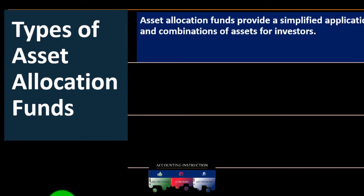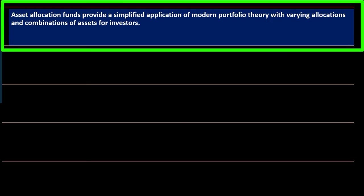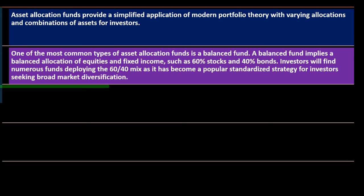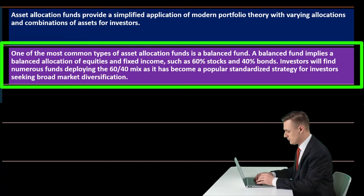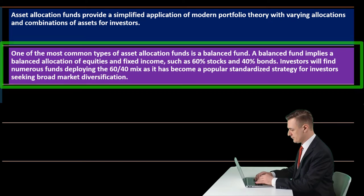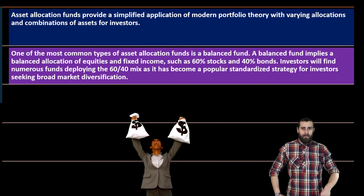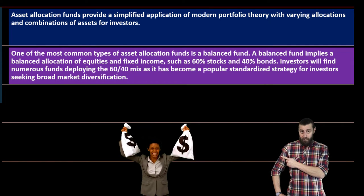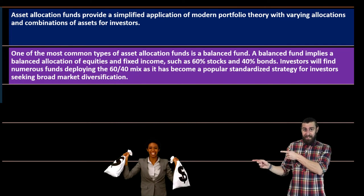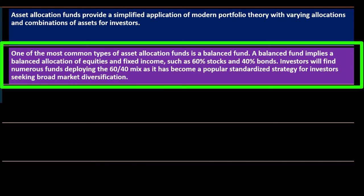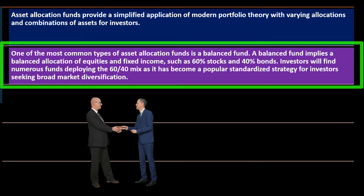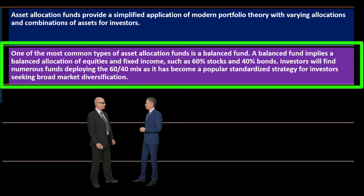Asset allocation funds provide a simplified application of modern portfolio theory with varying allocations and combinations of assets. One of the most common types is the balanced fund, which implies a balanced allocation of equities and fixed income — such as 60% stocks and 40% bonds. That's the standard 60/40 mix. Investors put money into the fund, which allocates across stocks and bonds targeting that 60/40 breakdown. Many funds deploy this mix as it has become a popular standardized strategy for broad market diversification.